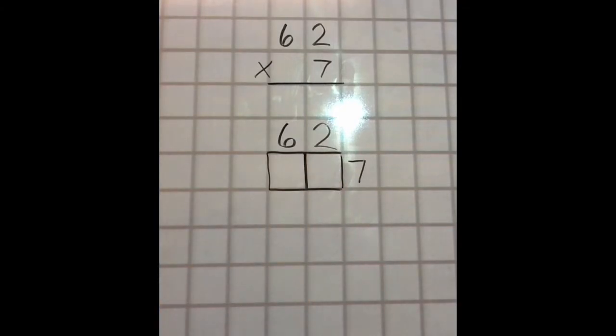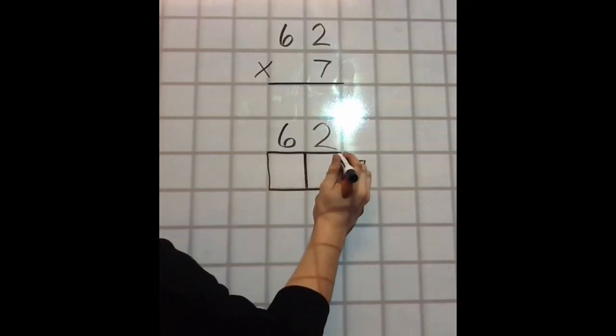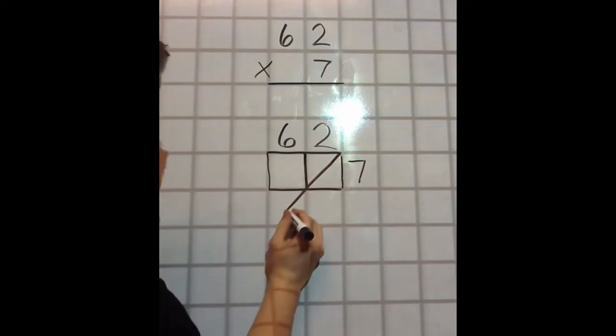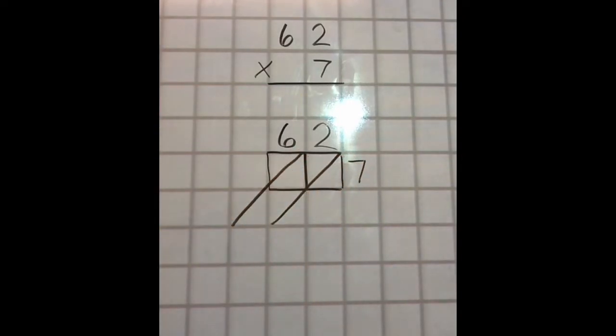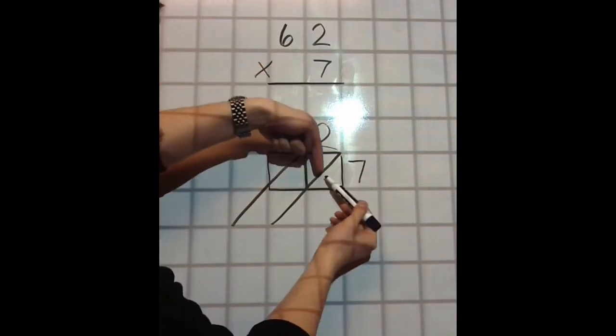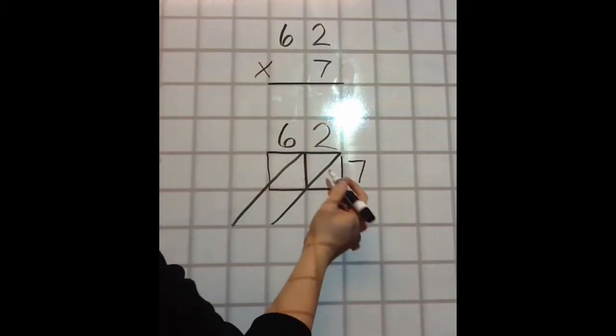From there, I go corner to corner, top right to bottom left, just like this. It should look a little something like that. From here, it's just simple multiplication.